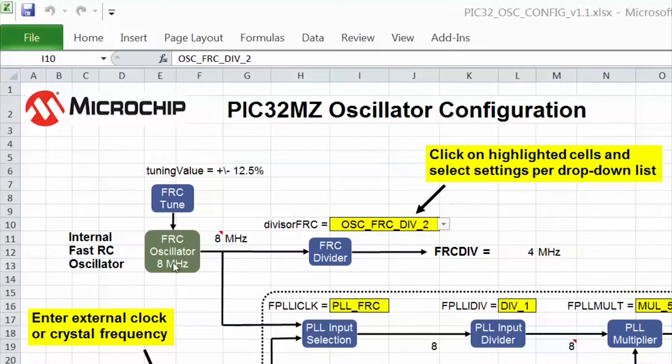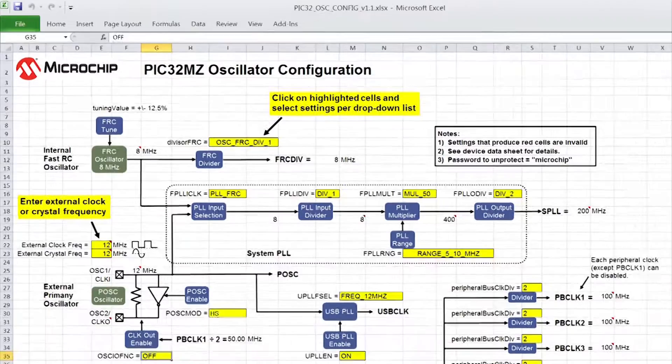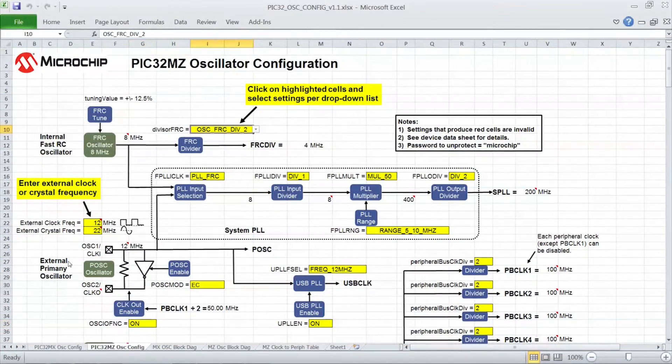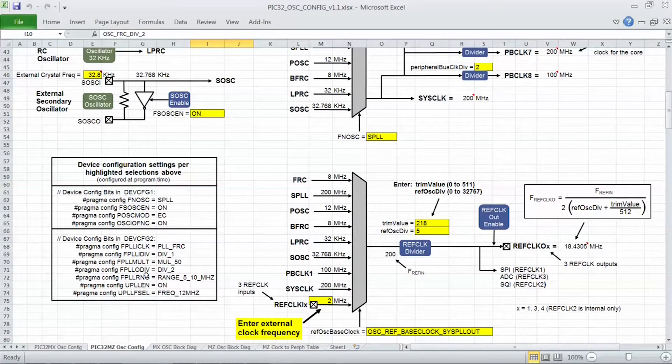Some of these settings are determined at build time, and some are determined at run time. All build time settings use the device configuration names defined in the datasheet. These settings will be grouped in this area, so you can easily cut and paste them into your code.